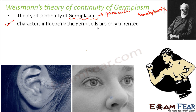Therefore, Weismann concluded that only the characters influencing the germ cells get inherited. In this way, Weismann showed that Lamarck's theory of evolution — which stated that acquired traits get inherited — is not correct, as acquired traits do not get inherited to the next generations.